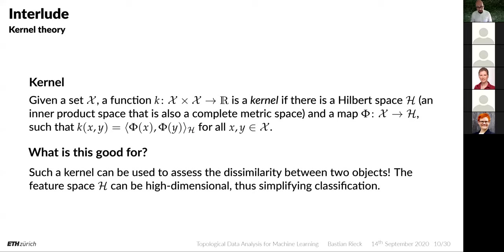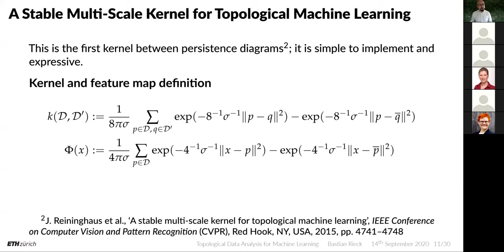A kernel is a way to calculate the similarity or dissimilarity between two objects using a high-dimensional feature space embedding based on a Hilbert space. The feature space H can be high-dimensional or even infinite-dimensional, which makes it easier to classify objects. This brings us to the first kernel between persistence diagrams. Recall that distance calculations with the bottleneck and Wasserstein distances are tough because you have to solve an optimization problem.